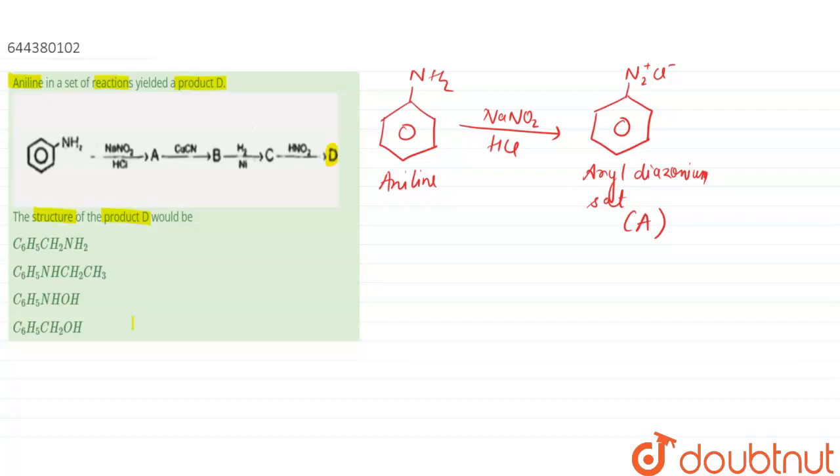Now this product A on reaction with CuCN, this reaction was diazotization. Now when the CuCN reacts with A, here Sandmeyer's reaction will take place.